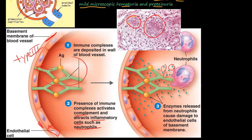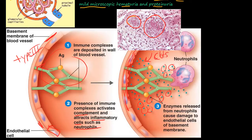The neutrophils start secreting lysozymes — enzymes that will destroy things. What happens is they destroy the immune complexes at a slower rate than they destroy the endothelial cells. Once you start destroying the endothelial cells, you get clots, cells that are re-proliferating, and all different kinds of responses to these lysozymes.